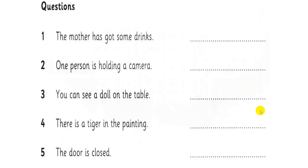Now you do the same with number 1, 2, 3, 4, 5. The mother has got some drinks. Number 2. One person is holding a camera. Number 3. You can see a door on the table. Number 4. There is a tiger in the painting. Number 5. The door is closed. Okay.